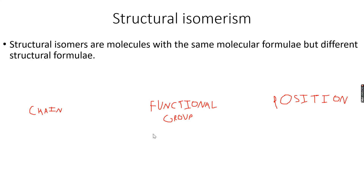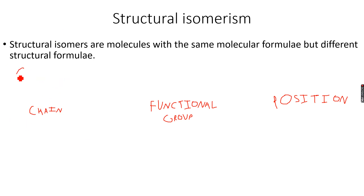These are the three types of structural isomerism: chain isomerism, functional group isomerism, and position isomerism. To explain chain isomerism, let's take an alkane with the formula C4H10, which has four carbon atoms and ten hydrogen atoms.